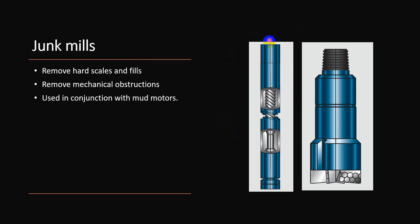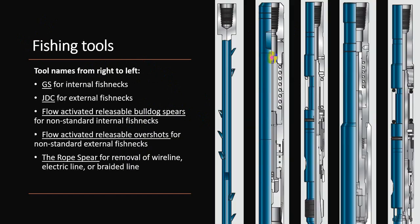Junk mills are used for hard scale or mechanical obstructions and are used with mud motors — they are most similar to a drill bit in drilling operations. Fishing tools come in different types for internal and external, standard and non-standard fish necks.